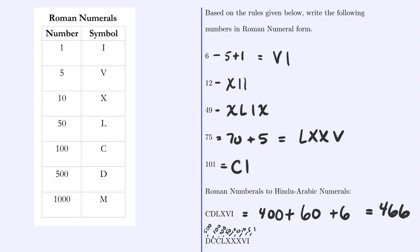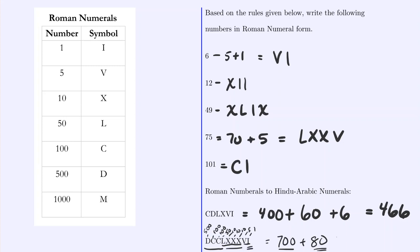Translating the next example symbol by symbol: D is 500, C is 100, C is 100 — so 500 + 200 = 700. Then L is 50, X is 10, X is 10, X is 10 — gives 50 + 30 = 80. Then V is 5, I is 1, so 5 + 1 = 6. They are always going from largest to smallest, so we just add them all: 700 + 80 + 6 = 786.